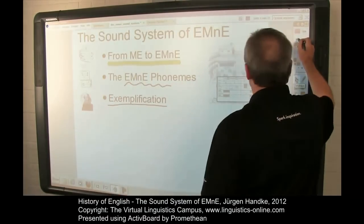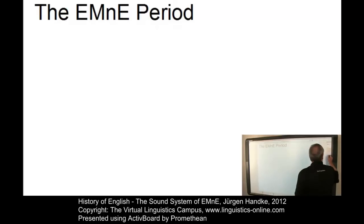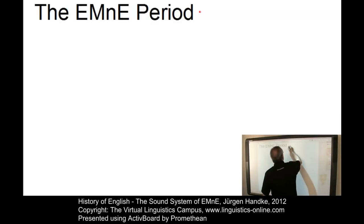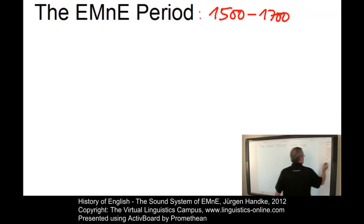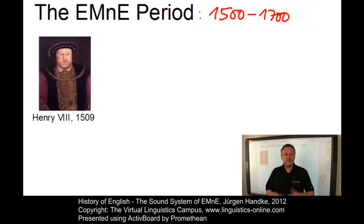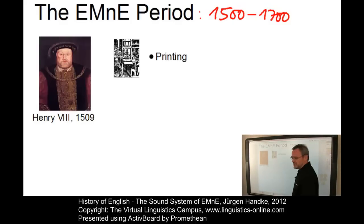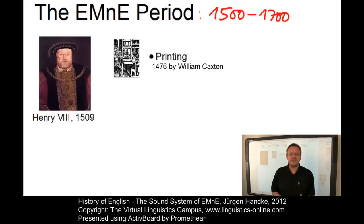Let us first of all look at the Early Modern English period itself. It began around 1500 and ended around 1700. Its beginning coincides with the ascendancy of Henry VIII to the throne in 1509. Further socio-cultural milestones that define the Early Modern English period are the invention of printing — the introduction of the printing press to England in 1476 by William Caxton.